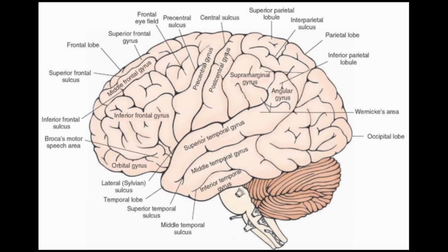The postcentral gyrus is divided from the parietal lobe by the postcentral sulcus. In the parietal zone you can see the superior and inferior parietal lobules, divided by the interparietal sulcus. In the temporal region you can see the superior, medial, and inferior temporal gyri, divided by the superior and middle or inferior temporal sulcus. A line dividing the temporal and the frontal-parietal zones is known as the lateral or sylvian sulcus, and it's important because it divides the cerebrum.